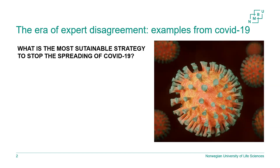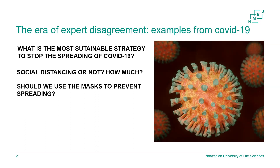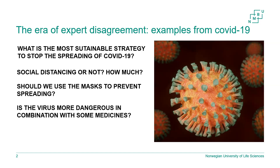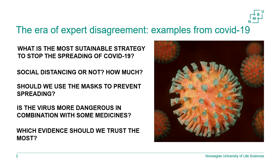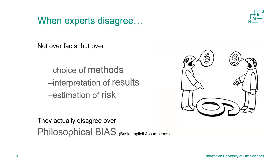One thing is that experts from different fields answer differently to the same question — for instance, what is the most sustainable strategy to stop the spreading of the virus? Epidemiologists have different ideas from economists. But it also happens among experts from the same discipline: Should we have social distancing? Will it work? How much? Should we use masks? Is the virus more dangerous in combination with some medicines, for instance medicine for blood pressure? Which evidence should we trust most — evidence from previous theories, from small studies done so far, or should we wait for bigger studies?